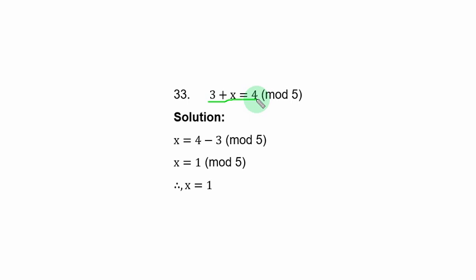What you have here is like a simple linear equation, 3 plus x equal to 4. You need to collect like terms, so you transfer plus 3 to the right hand side. When you do that, you have only x left on the left hand side. So x is equal to 4 minus 3 modulo 5. And x is equal to 1 modulo 5.